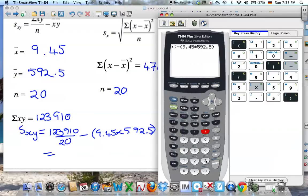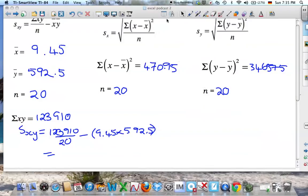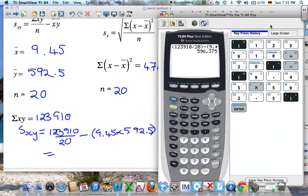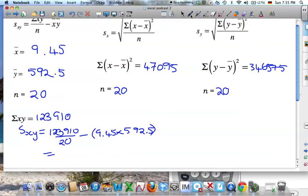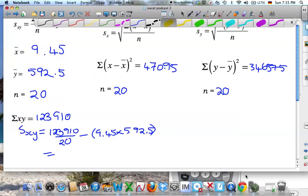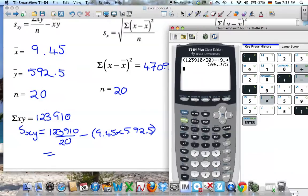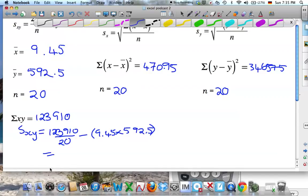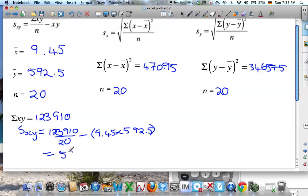In brackets 9.45 times 592.5. So of course you're allowed to use a calculator to do these calculations. When I say by hand I don't mean that you have to do long multiplication by hand or anything. So 596.375.